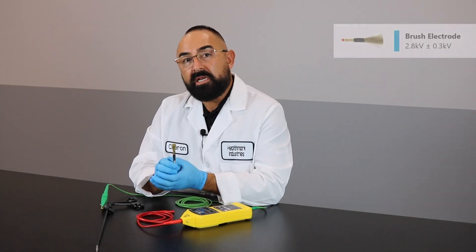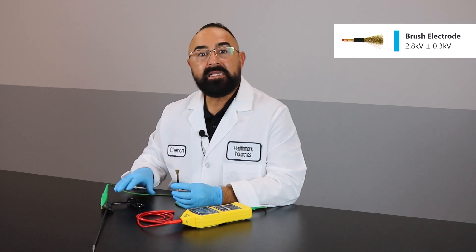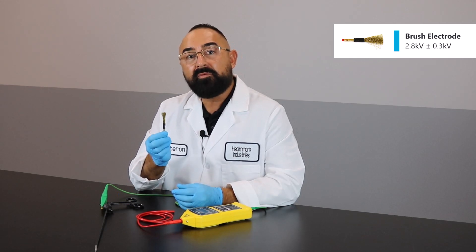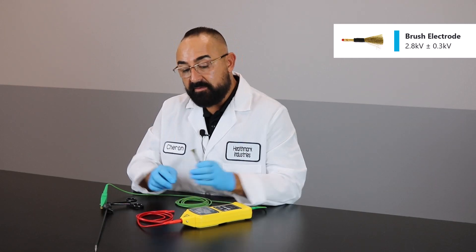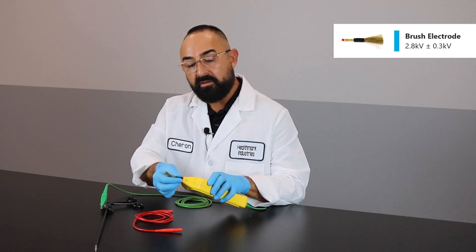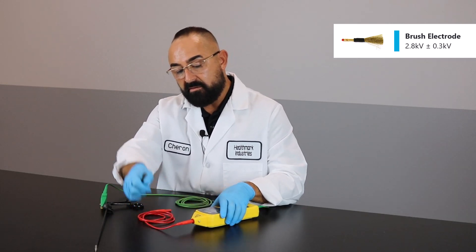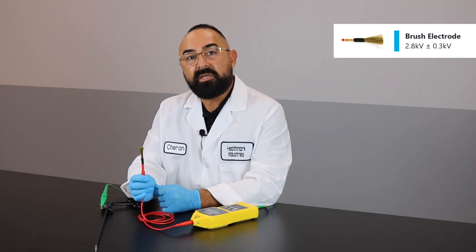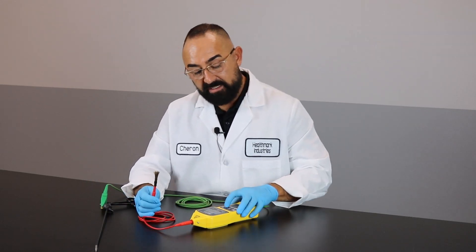This accessory is called the brush electrode. We're going to be using it today to specifically test an insulated handle on our laparoscopic instrument. You will see throughout the tutorial that it will be used in tandem with other accessories when testing. There's two different ways this can be used. This can go directly into the unit itself like so. Or using your red HV wire, you would connect the wire to the unit and the brush electrode to the wire.